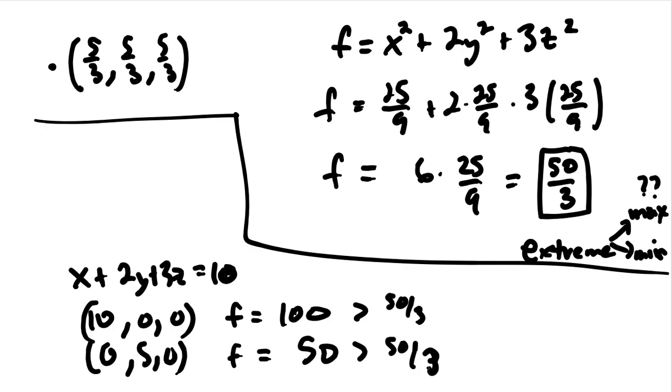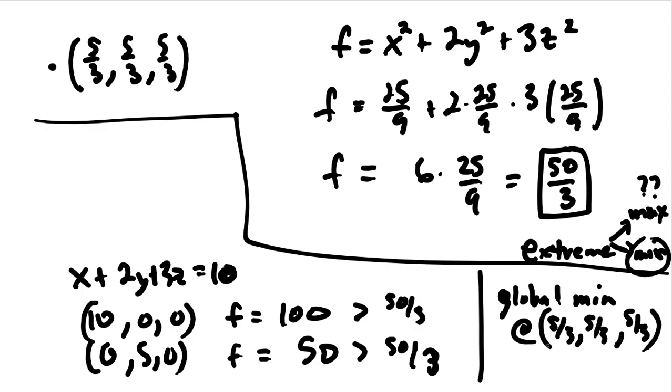How could this be extreme maximum if we're getting other constraint values that are larger than it? So this tells us then that we have extreme min. We have the global minimum at 5 thirds, 5 thirds, 5 thirds. And our reasoning is that other constraint values, when plugged into our function, gave us larger output values. And so that means our extreme value must be the minimum.